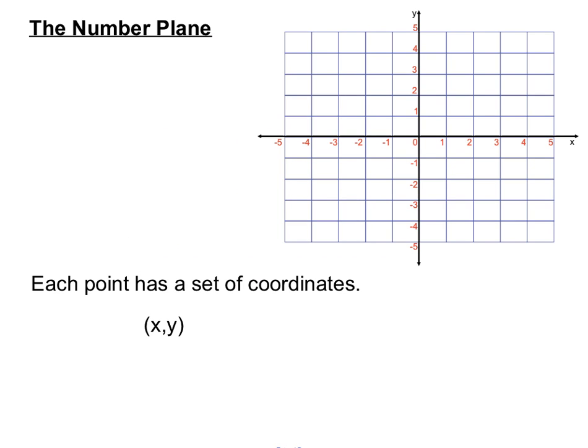Each point on the number plane has a set of coordinates. It has an x value, an x coordinate and a y coordinate. And together they make up what we call an ordered pair or a set of coordinates.